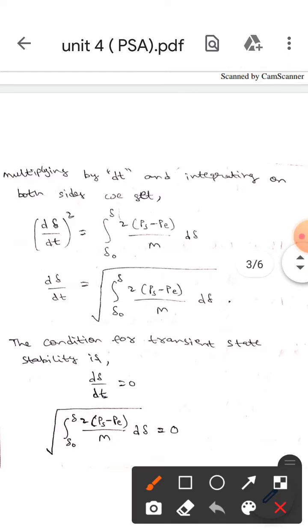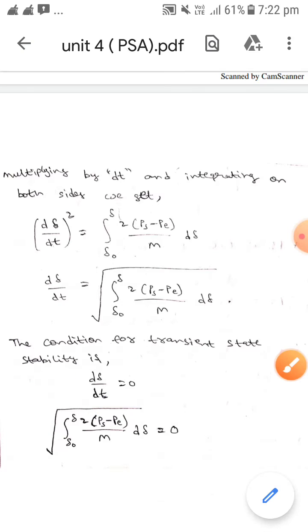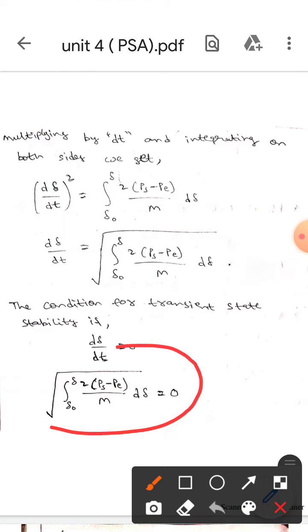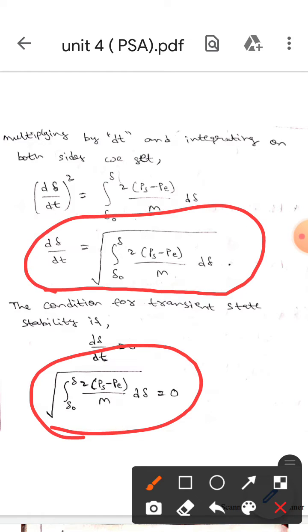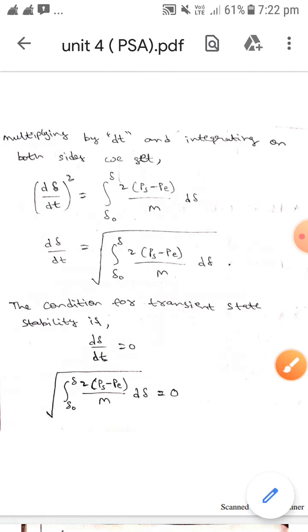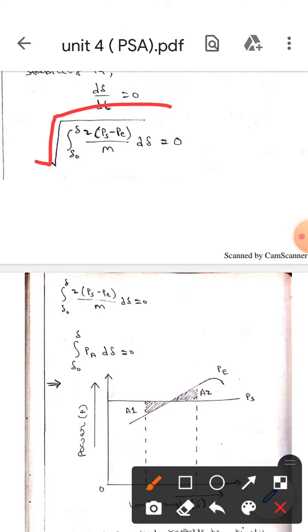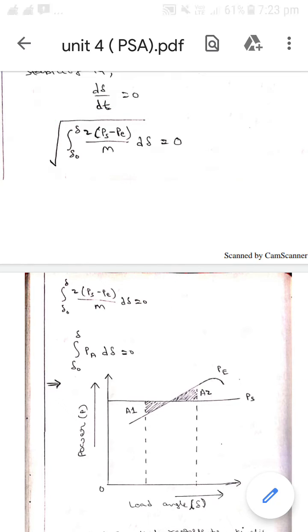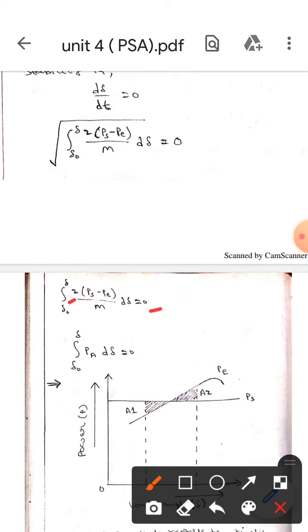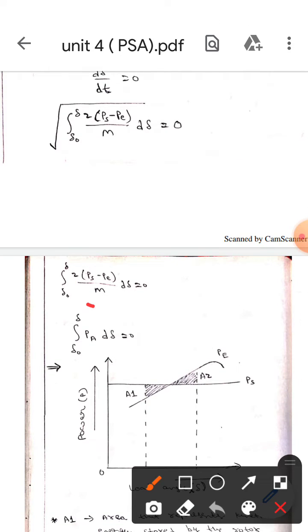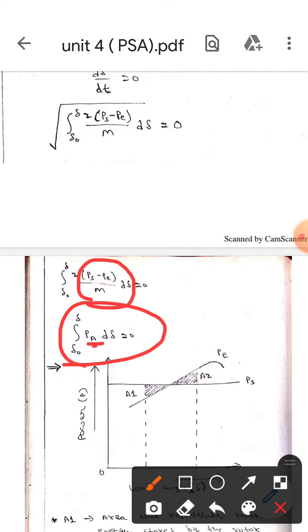Now for the transient stability condition, dδ/dt equals zero, which means the integral term also equals zero. Removing the square root and simplifying, in place of (Ps minus Pe)/M we can write Pa, giving us the equation: